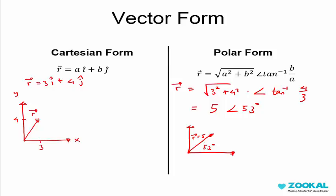Now let's convert back this polar form to Cartesian form. You have this component at 53 degrees.